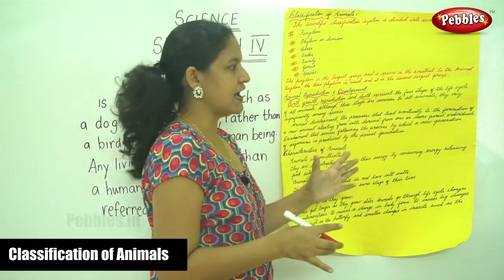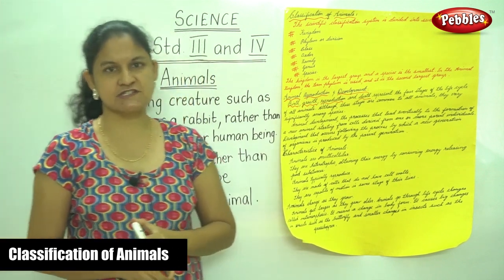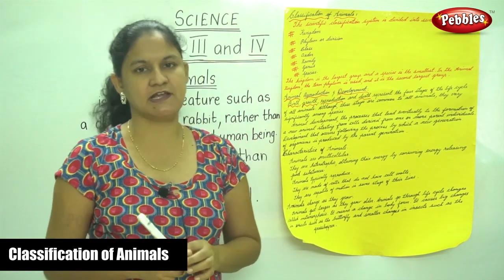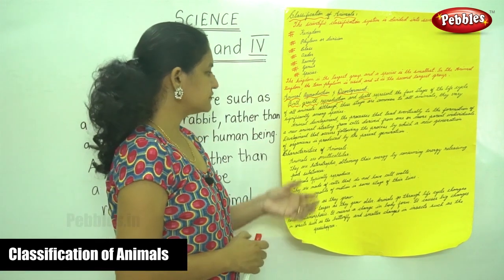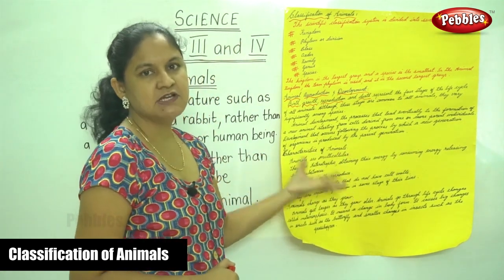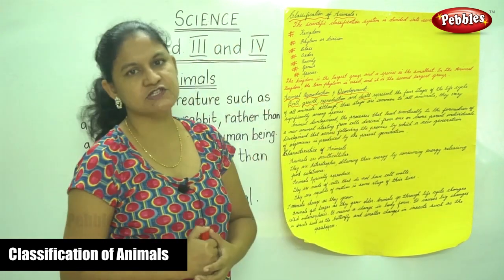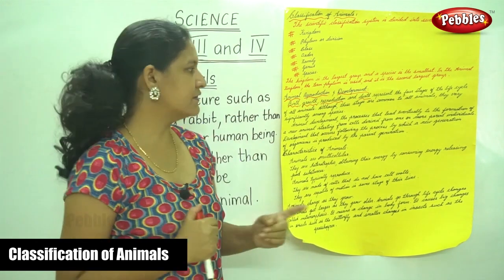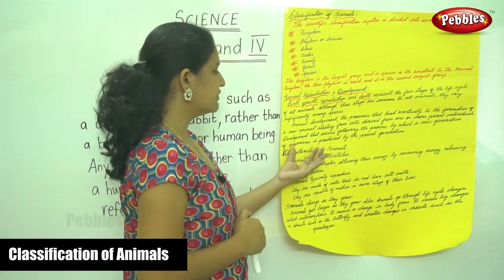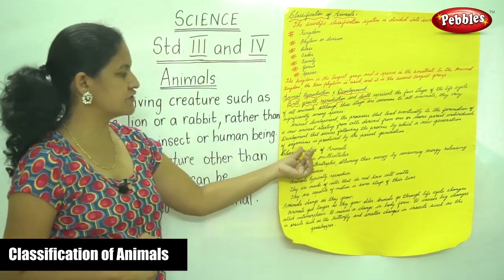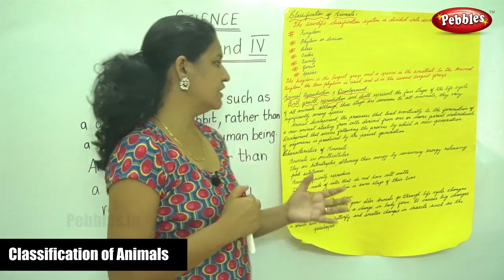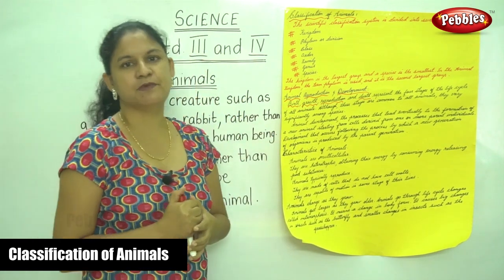Although these four stages of the life cycle are common to all animals, they vary significantly among species. Animal development refers to the processes that lead to the formation of a new animal, starting from cells derived from one or more parent individuals, produced by the parent generation.